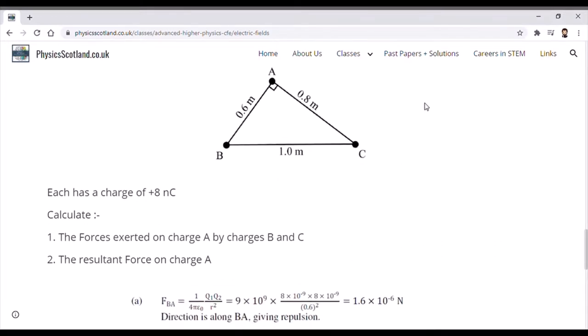You're going to end up with the value of 9 times 10 to the 9 times 8 times 10 to the minus 9 times 8 times 10 to the minus 9—remembering to convert from nanocoulombs to coulombs—and dividing by the separation between A and B, which is 0.6 meters, remembering to square that. This gives us 1.6 times 10 to the minus 6 newtons as our force value. The direction of that force is along the line BA, giving repulsion. These are like charges, so they will be repelling each other.